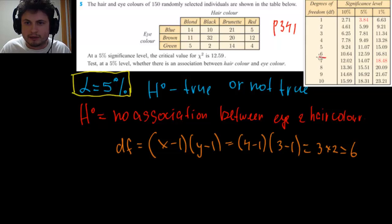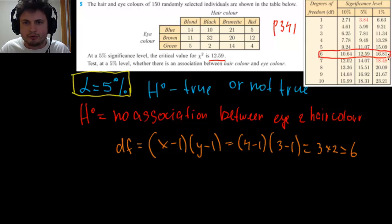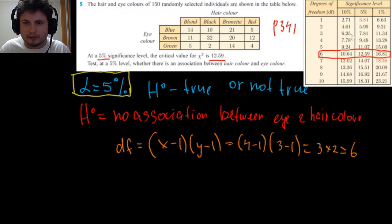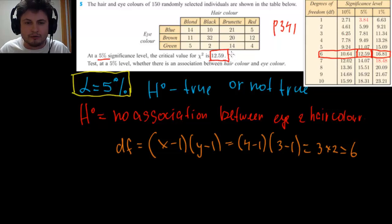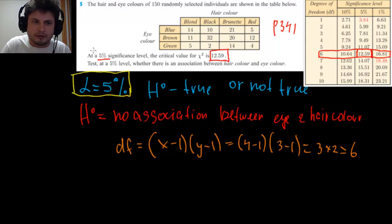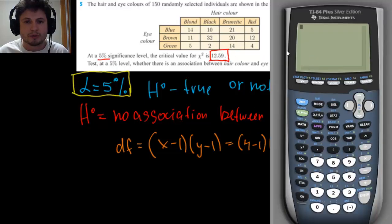We're looking at this particular area of the table. Usually this will be given to you on a test. At 5%, the critical value is 12.59 — that is why we're given this value. So let's go ahead and figure this out using the chi-square independence test.